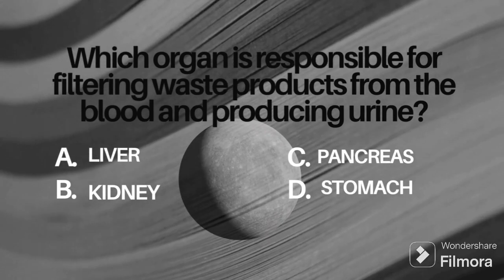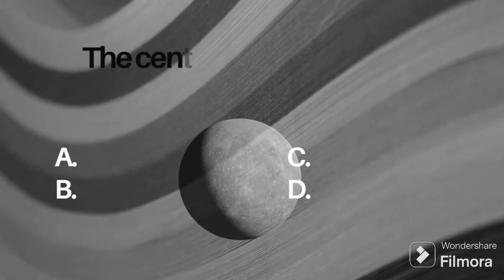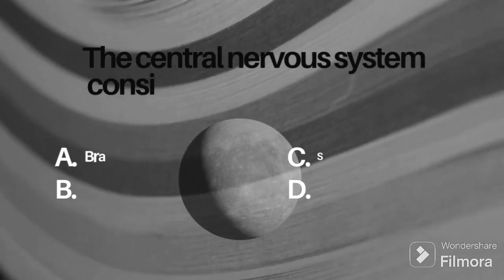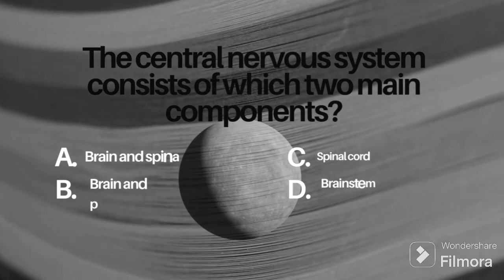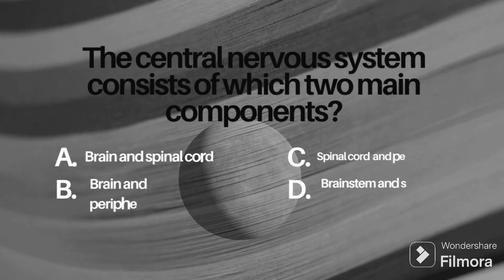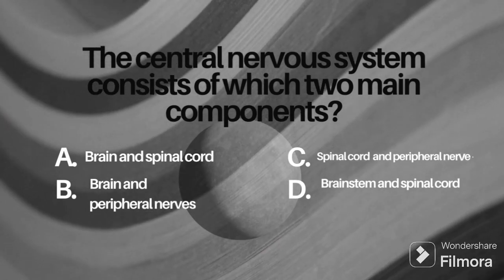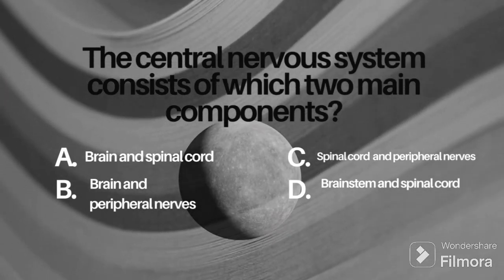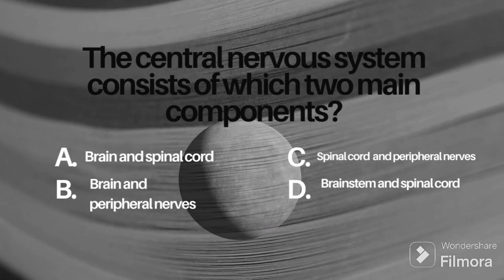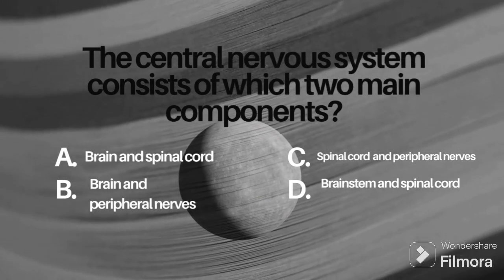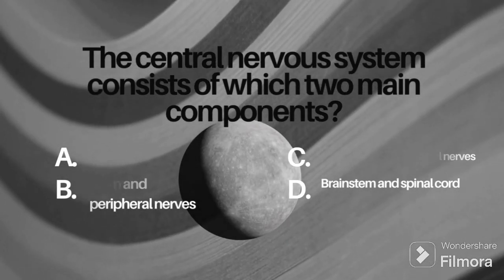The fourth question is: the central nervous system consists of which two main components? Option A: brain and spinal cord, B: brain and peripheral nerves, C: spinal cord and peripheral nerves, D: brain stem and spinal cord. This is also an important question — give your answer in the comment box.